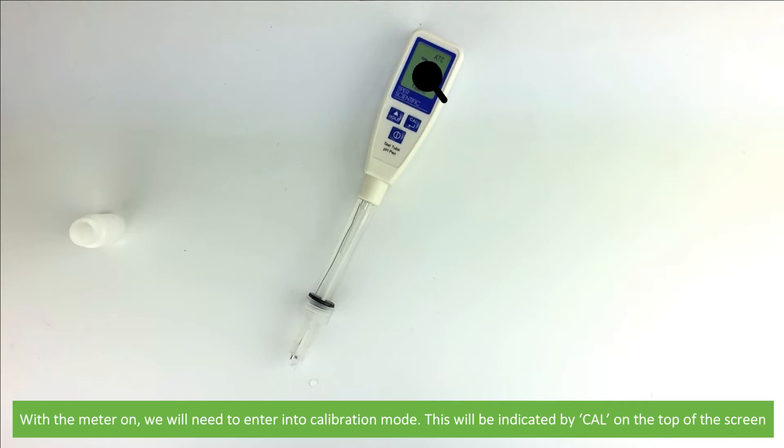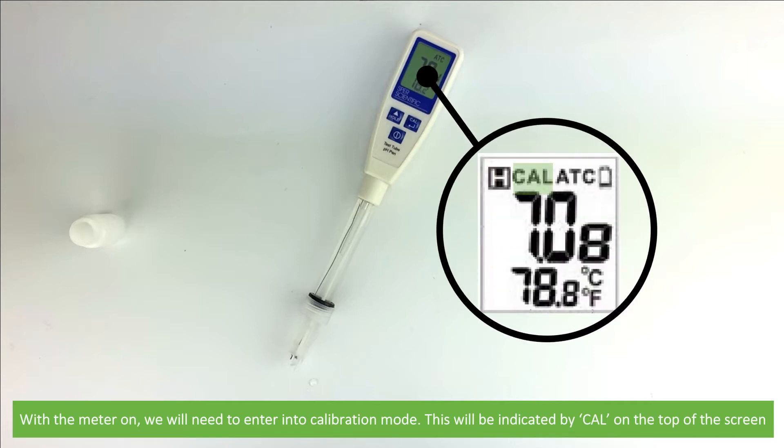With the meter on, we will need to enter into calibration mode. This will be indicated by CAL on the top of the screen.